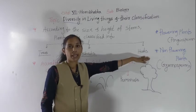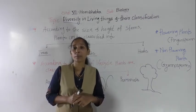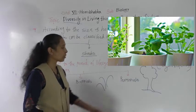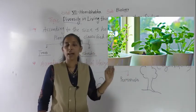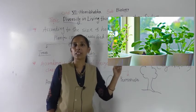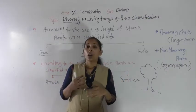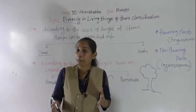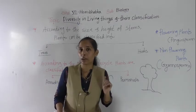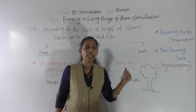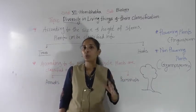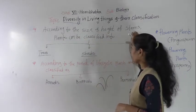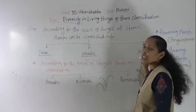The next category is herbs. The stem of herbs is short, green, and very thin. Herbs have short height, a green-colored stem that is thin and soft. Herbs may not have branches, and they can survive only for a short period of time — their lifespan is short. We can say that herbs can survive only for one or two seasons.